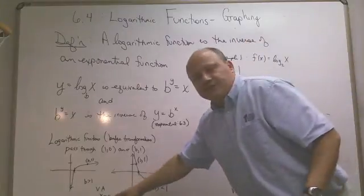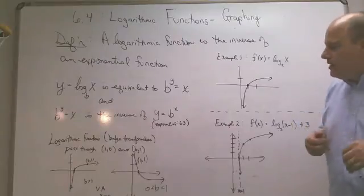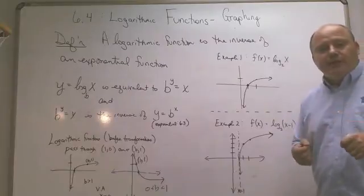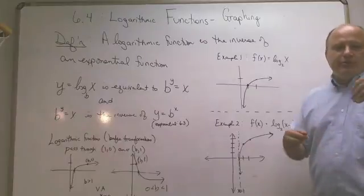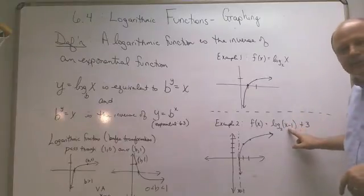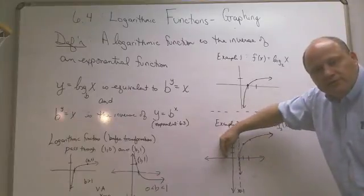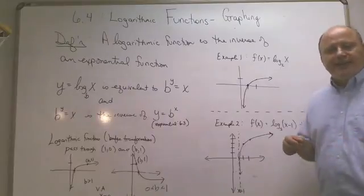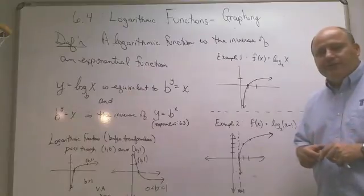So the vertical asymptote on this one is x equals 1 because it got moved 1 unit to the right. Remember, before it was x equals 0, but when you move everything to the right 1, now it's x equals 1. So not only do the points get moved, the asymptote gets moved, just like we did when we had a shift on the exponential functions. This time it's shifted to the right. I could just as easily shifted it to the left and made it x plus 1 and the vertical asymptote would have been over here. So everything is switched on the exponential and logarithmic functions.